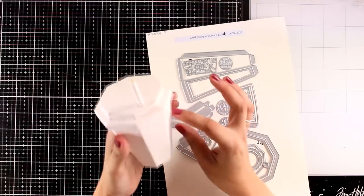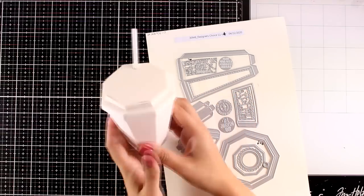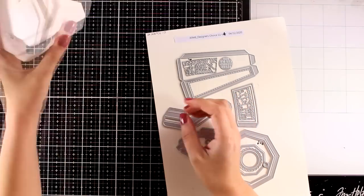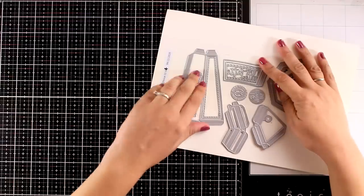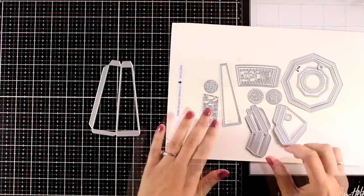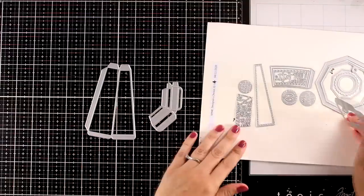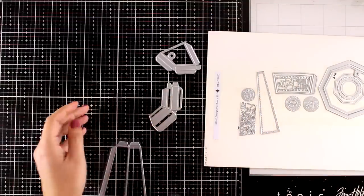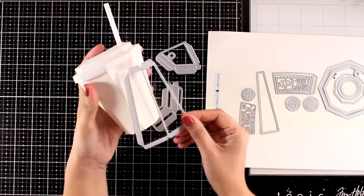There are dies to decorate the cup, like for example a little sleeve to put all around and I'm going to show you different ways on how you can decorate it. I think it is really adorable, you can add inside little treats or even a gift. And it can work as a gift box or a treat box.